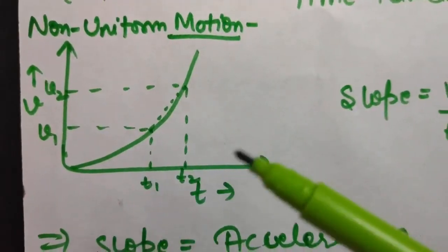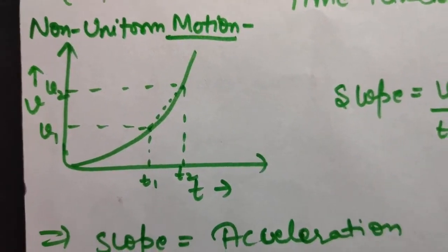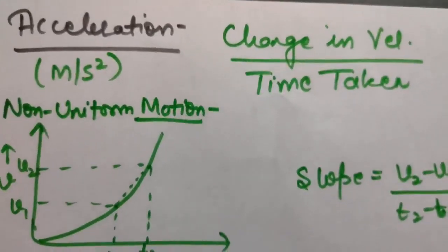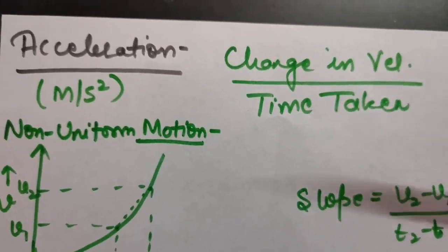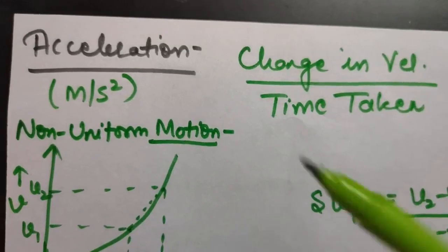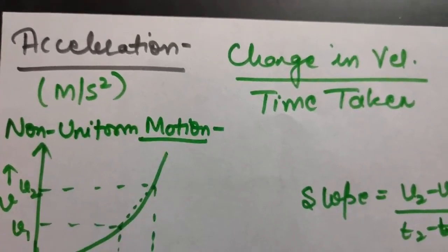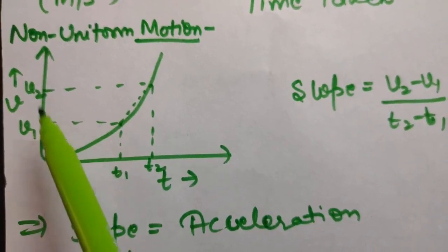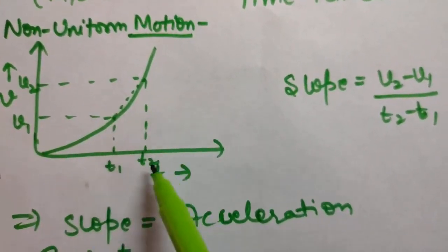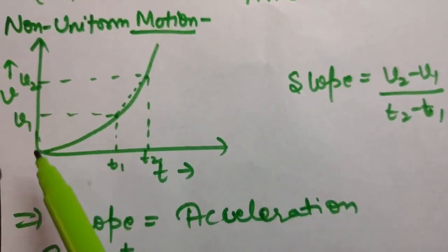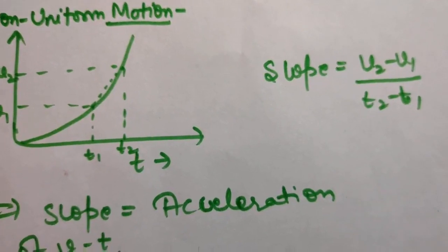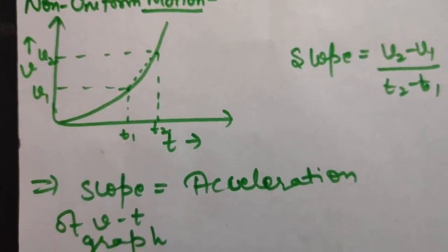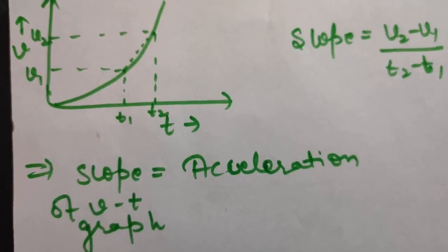The slope of the velocity-time graph gives acceleration. Acceleration is defined as change in velocity divided by time taken, with SI unit meter per second squared. Slope equals v2 minus v1 divided by t2 minus t1, which is change in velocity upon time interval - that is your acceleration.